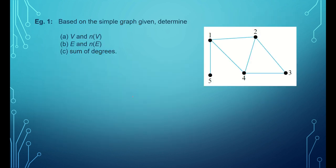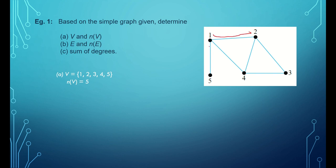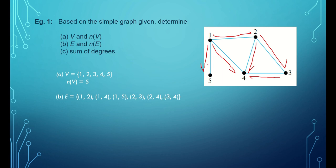Next, example 1. Based on the simple graph given, determine V, E, and the sum of degrees. V = {1, 2, 3, 4, 5}, so the number of vertices is 5. The edges are: (1,2), (1,4), (1,5), (2,3), (2,4), and (3,4) — that is 6 edges. The sum of degrees is twice the number of edges: 6 × 2 = 12.